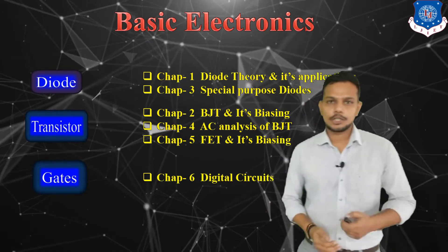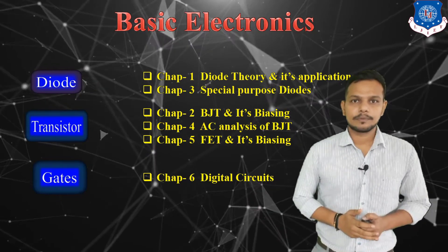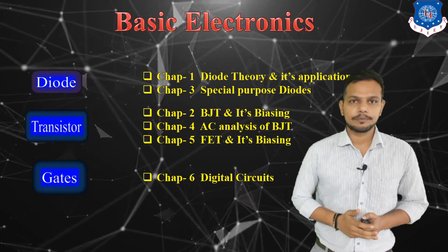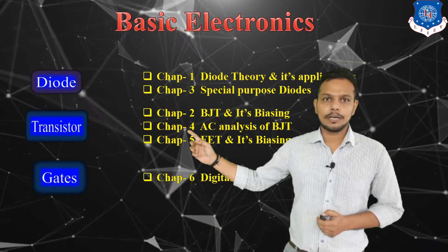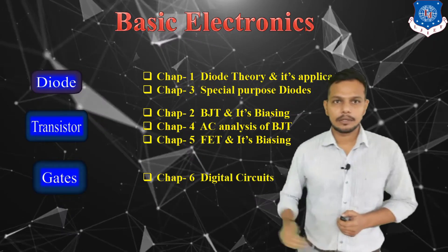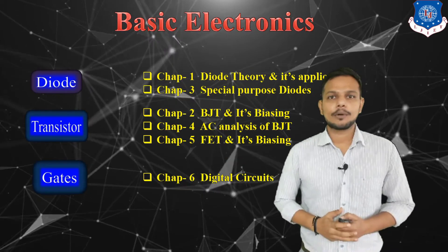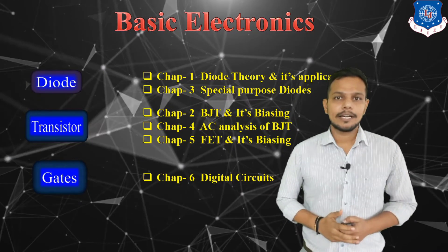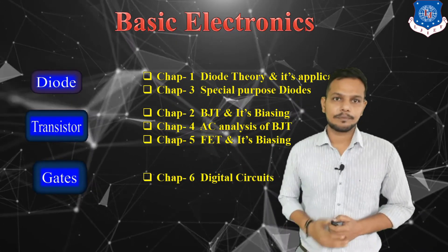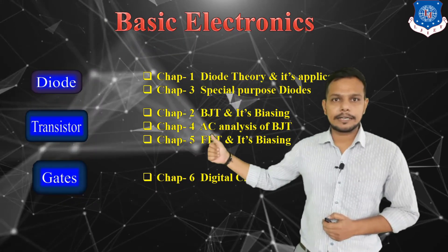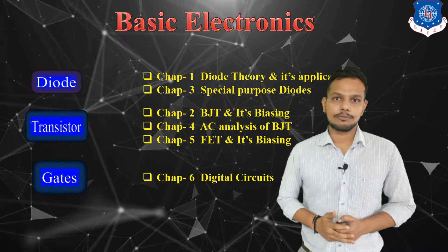The next component is transistor. Transistor is classified into two types: one is BJT and another one is FET. BJT contains two chapters — chapter number two and chapter number four. Chapter number two is BJT and its biasing, in which we are going to discuss about the working principle, construction of bipolar junction transistor, and its biasing. Chapter number four is also related to BJT, in which we are going to discuss about AC analysis of BJT.